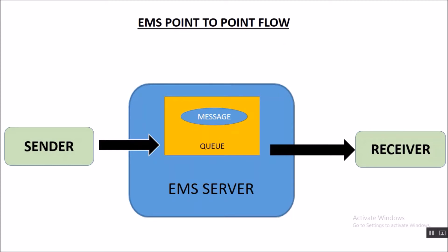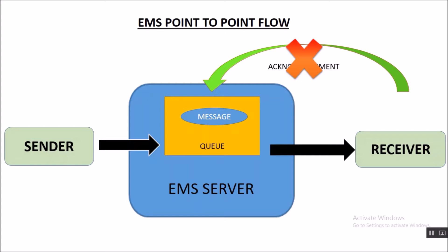Consider a case when we are not able to send the acknowledgement for any reason. If the acknowledgement is not sent, then our EMS Server will not be able to know whether the message has been delivered to the receiver or not. In that case, our EMS Server will try to redeliver the message again and again. This was a quick overview of how acknowledgement works in EMS Point-to-Point flow.